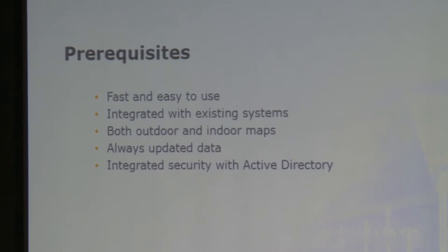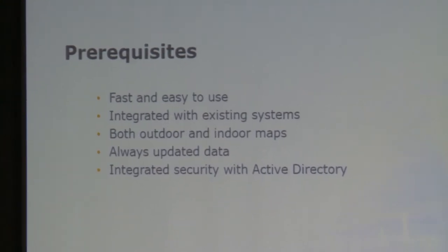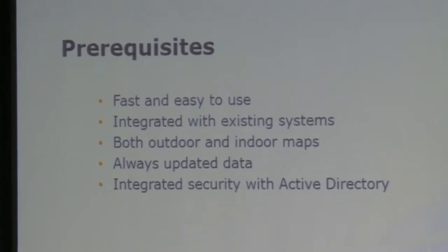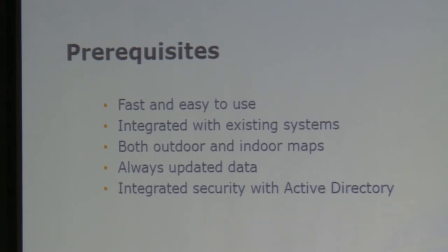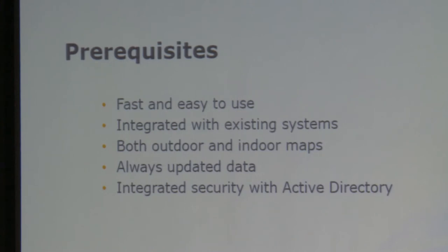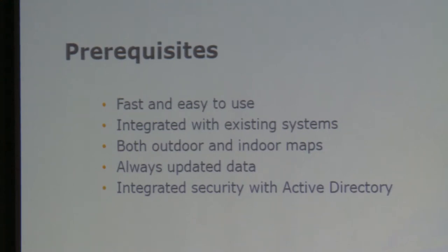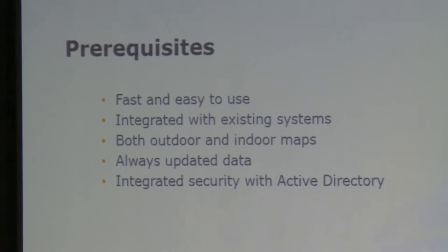Their prerequisites were: fast, easy to use, and integrated with existing systems — they have systems with all their drawings and a lot of documentation. They wanted both outdoor maps for doing analysis like flooding risk analysis, after the accident in Japan a couple of years ago, and indoor maps so they could connect data with rooms and things inside the rooms. They always wanted updated data — fresh data was very important. And of course they wanted to integrate security with their Active Directory, with a very strict policy on who can see what.